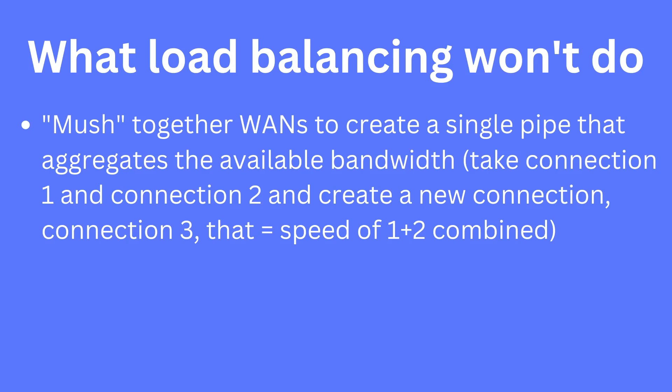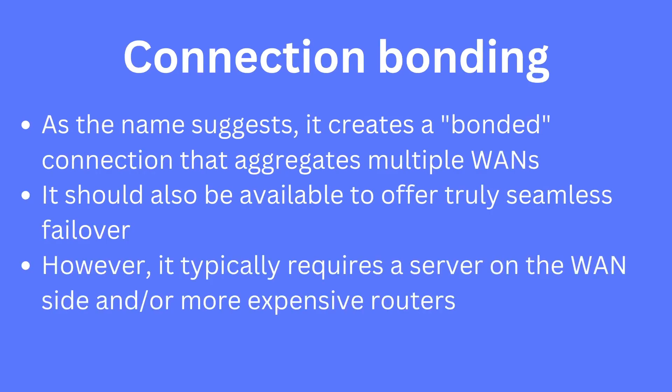Those are all the cool things you can do with a load balancer — very useful. But here's the critical thing you can't do, and I call this mushing: mushing together different WANs to create a single pipe that aggregates the available bandwidth. Taking connection one and two and creating a new combined connection that uses various speeds — that is what connection bonding does. When people want to take all their internet connections and make one very fast internet connection, that's not a load balancing feature, that's a connection bonding feature. Connection bonding creates a bonded connection that aggregates multiple WANs, but it requires hardware that sends packets out to different WAN servers. One key advantage is that failover is really seamless.